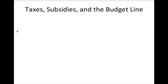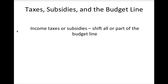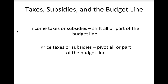Generally speaking, the effect of taxes or subsidies on a consumer's budget depends on whether the tax or subsidy affects prices or income. If the tax or subsidy affects income, then all or part of the budget line will shift as a result. If the tax or subsidy affects prices — as is the case with sales taxes or the gas tax — then the budget line will pivot. You should familiarize yourself with the examples of the effects of taxes and subsidies on the budget line in section 2.6 of your textbook, and be prepared to analyze similar scenarios in your team exercises in class.